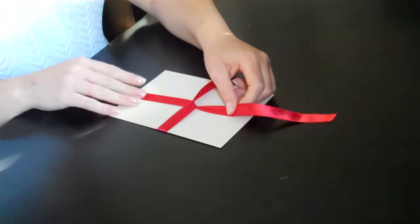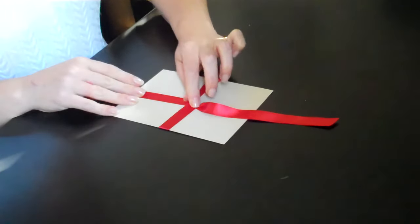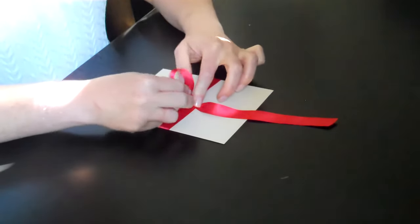We're going to pull the knot snug and hold the knot in place. Then we're going to make two loops.